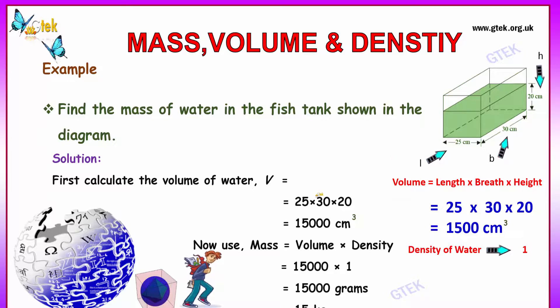Length into breadth into height. So multiplying 25 into 30 into 20, you get the value as 15,000 cm cube.